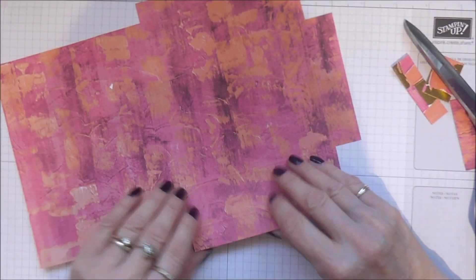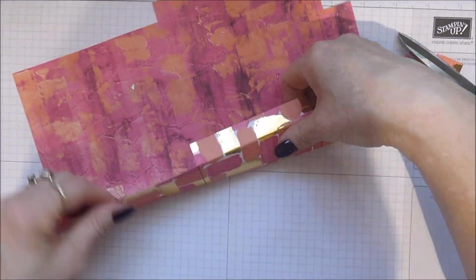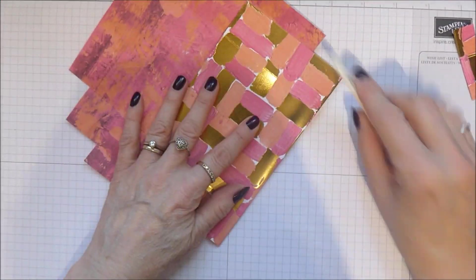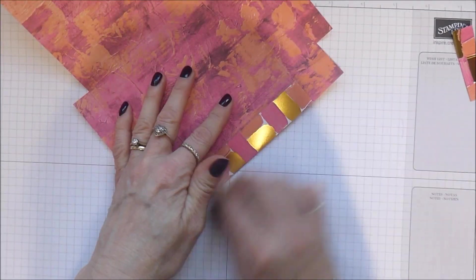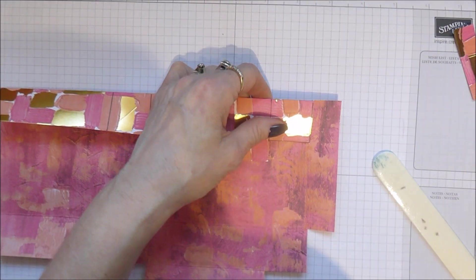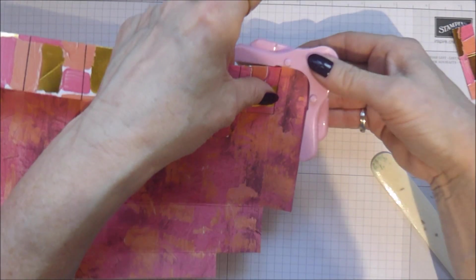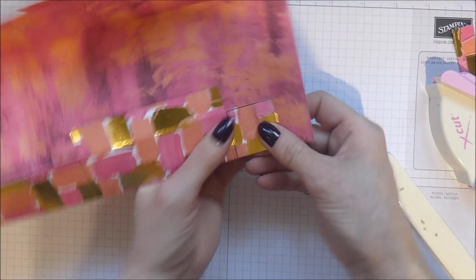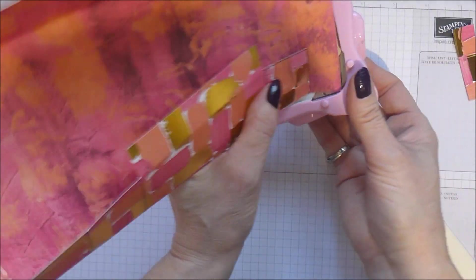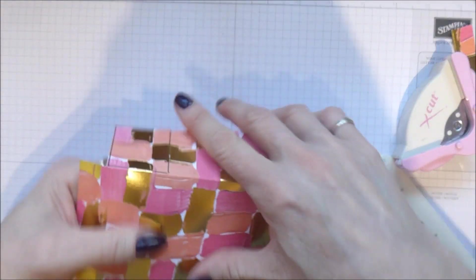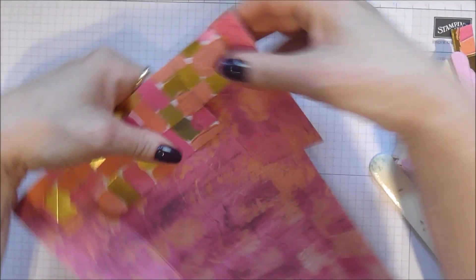So now I'm just going to burnish my lines. And whilst I'm at this point I'm just going to take my corner rounder now and I'm just going to round off this corner. Because this will help the front of the box tuck in nice and easily. And I'm also just going to round off these corners here.